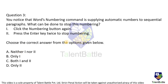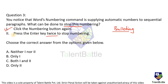The next question: you notice that Word's numbering command is supplying automatic numbers to sequential paragraphs. What can be done to stop this numbering? You can click the numbering button again — that option is in the format menu. You can also press the Enter key twice to stop the numbering. So both methods work, and option C — both one and two — is the correct answer.